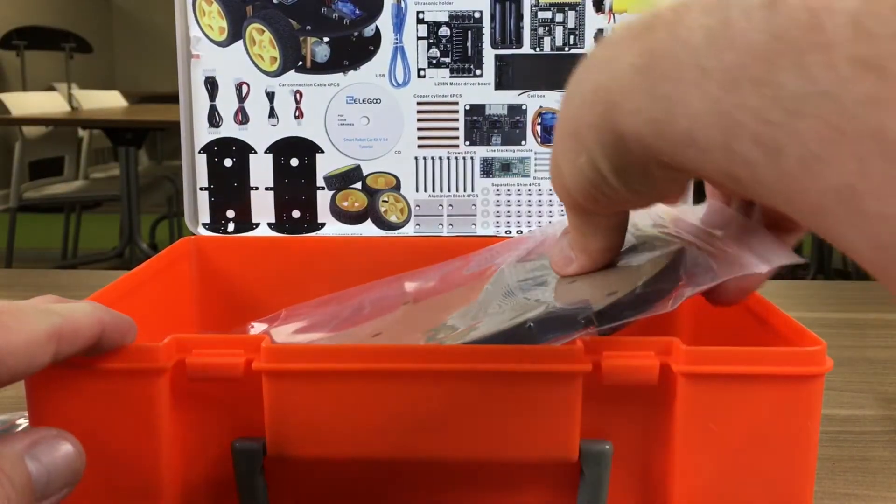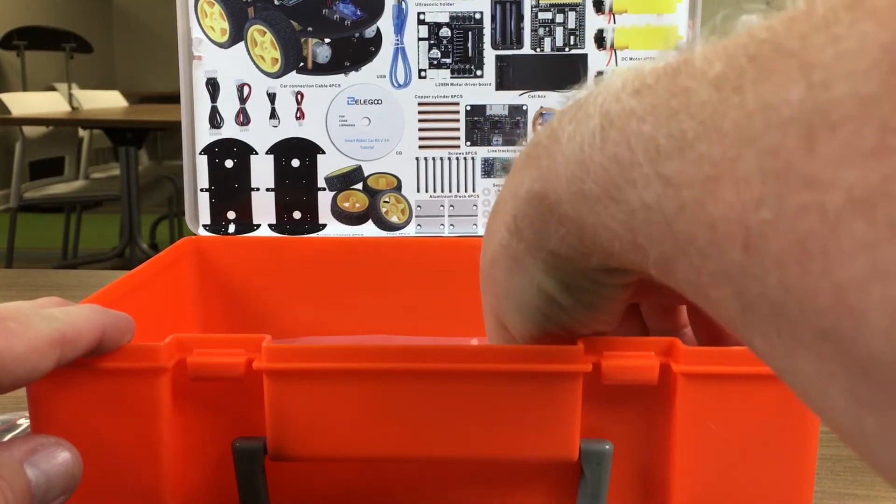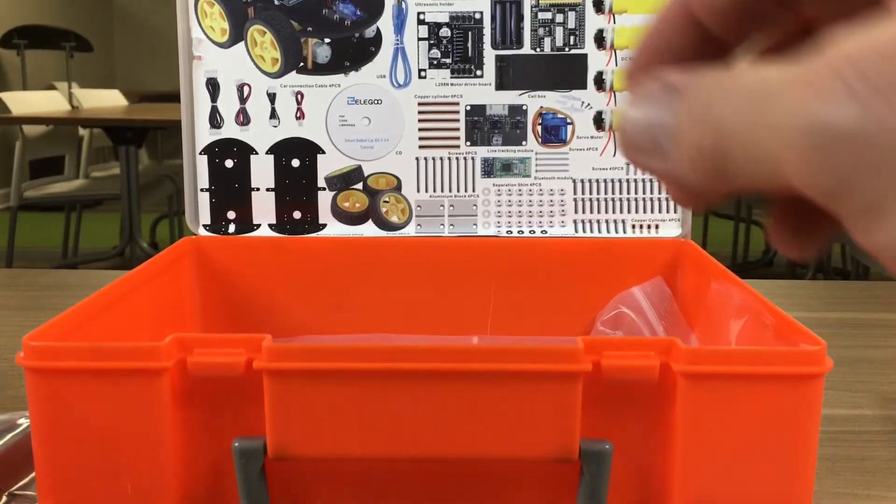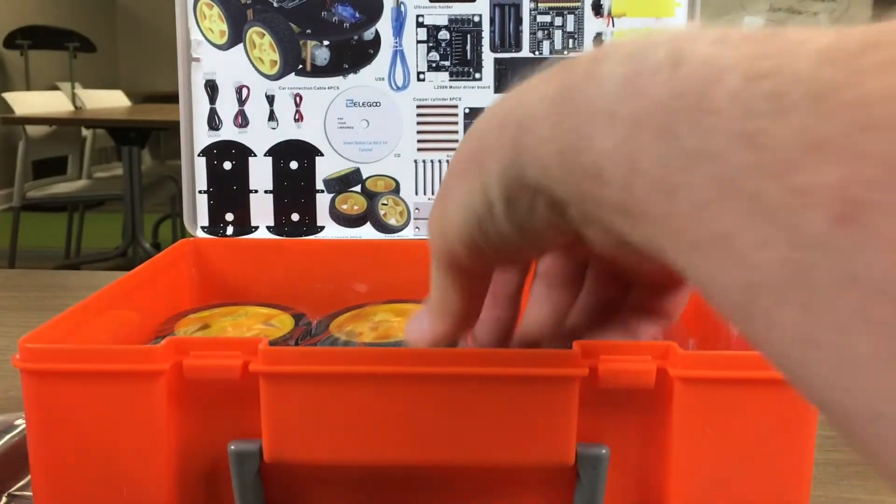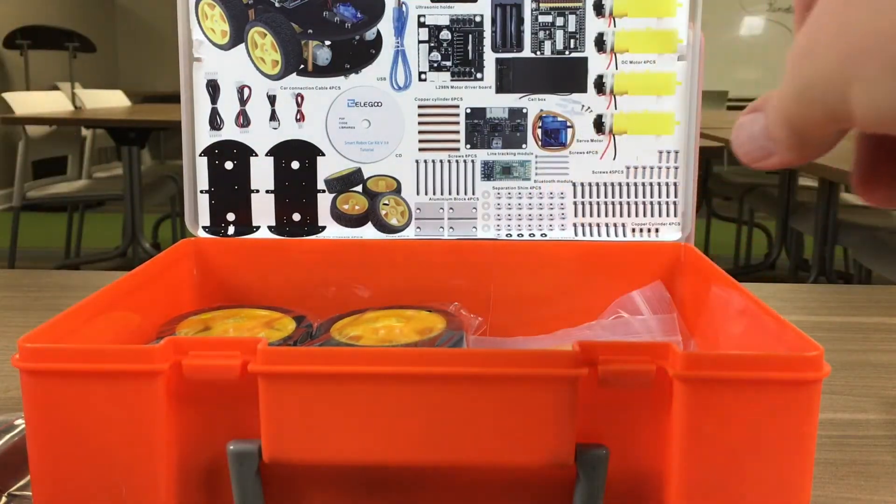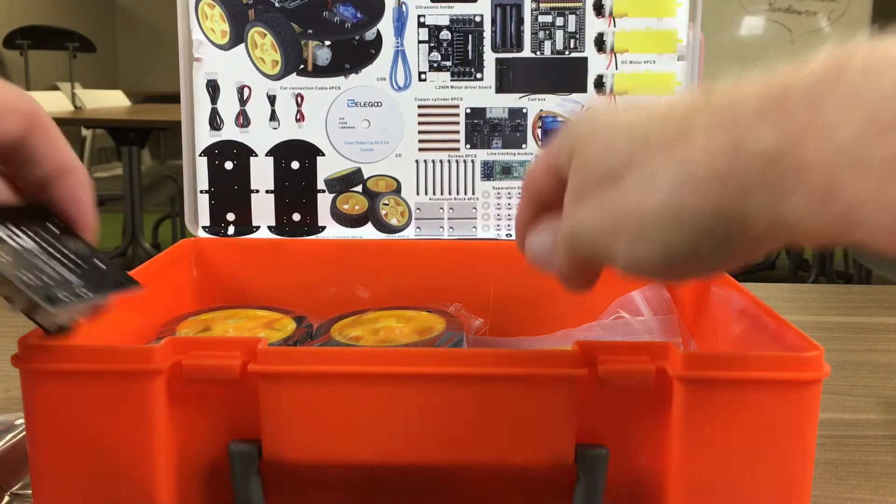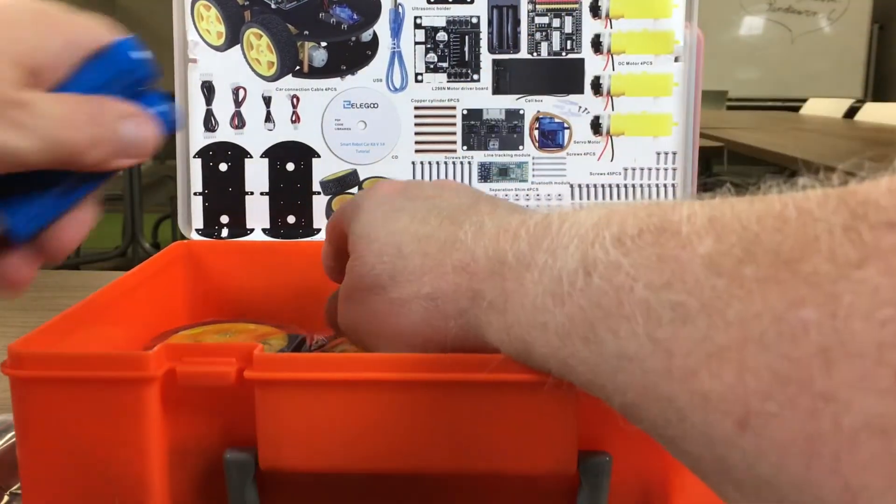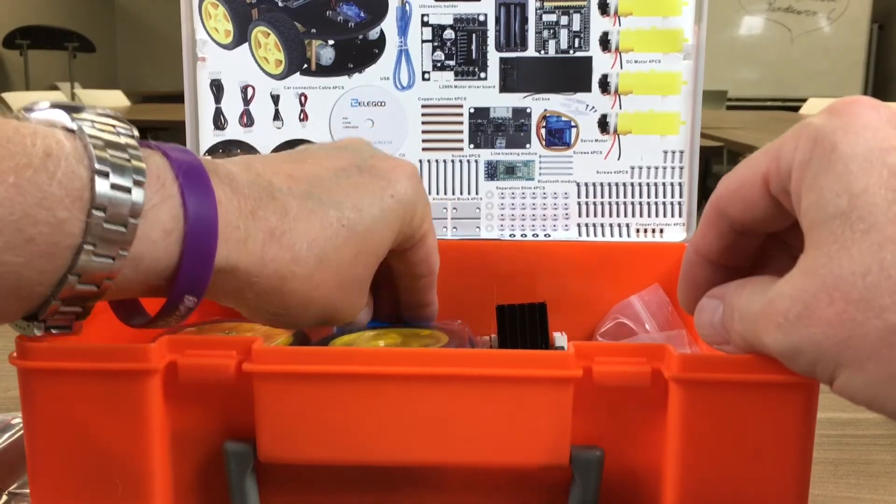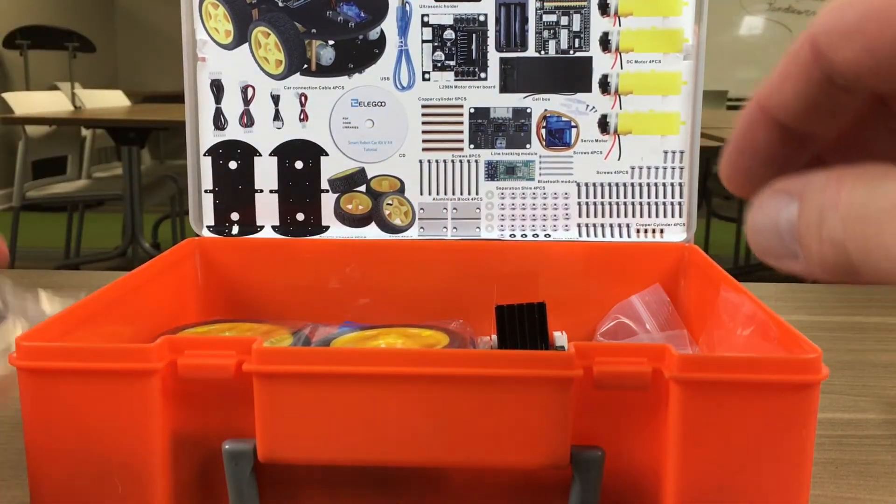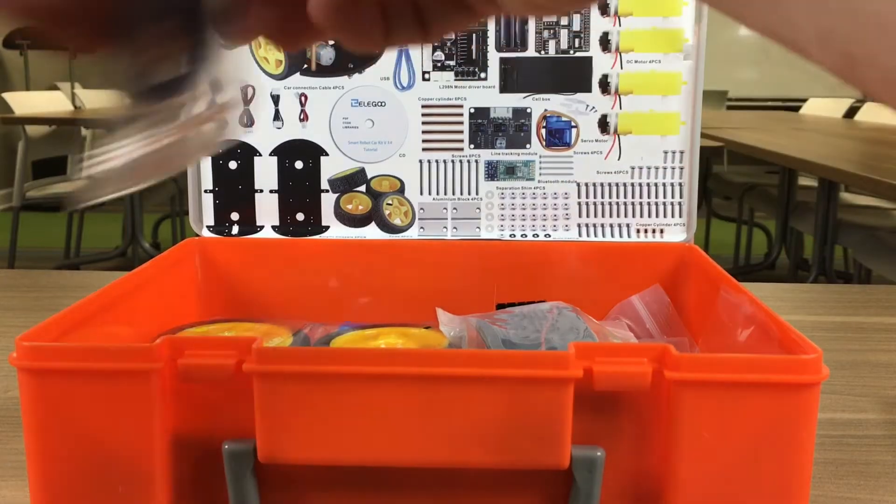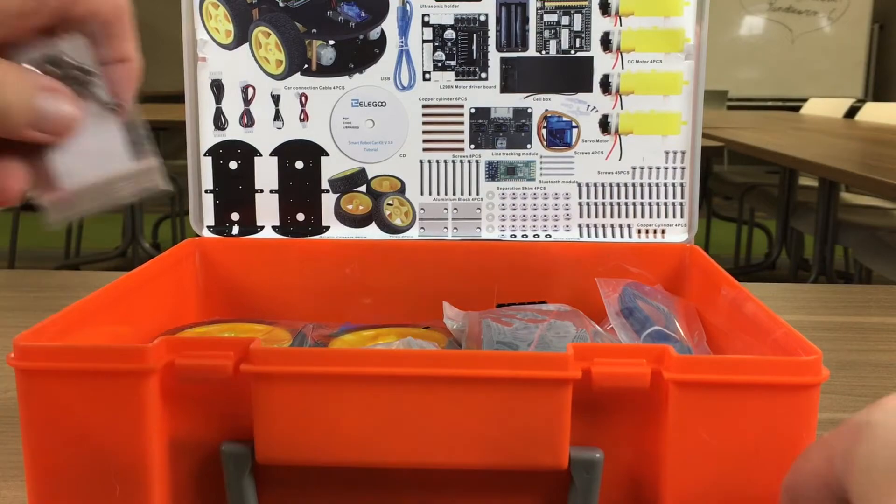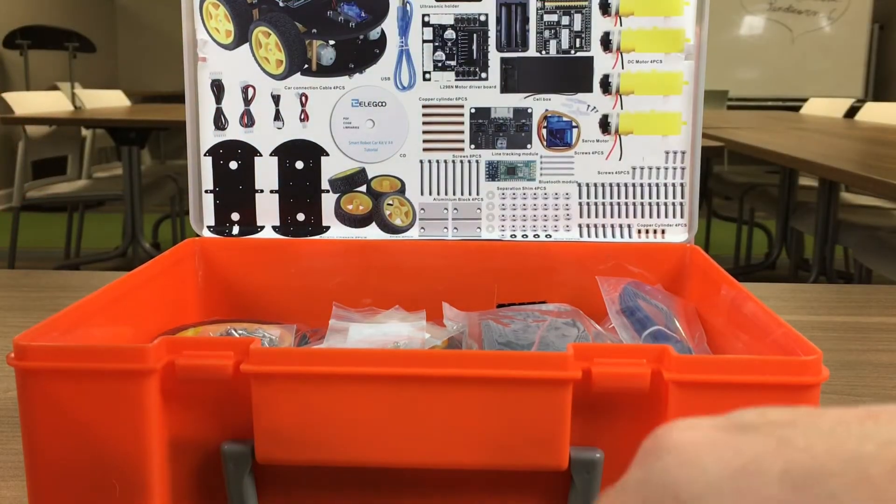So it's just a real quick unboxing. Like I said, this is just going to be the first part of the series here. We're going to have several videos that we're going to go over putting together the chassis and building the robot car and programming it. Sorry that I kind of bumped into the camera—a little shaky camera work there—but hope this was a good introduction and gave you a basic idea of what's in the kit and look forward to putting this kit together.